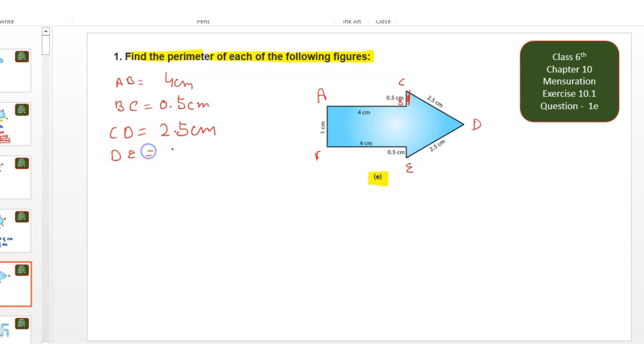DE is equal to 2.5 cm. Here is F, and this is DE. EF is equal to 0.5 cm. FD is equal to 4 cm. Perimeter is equal to